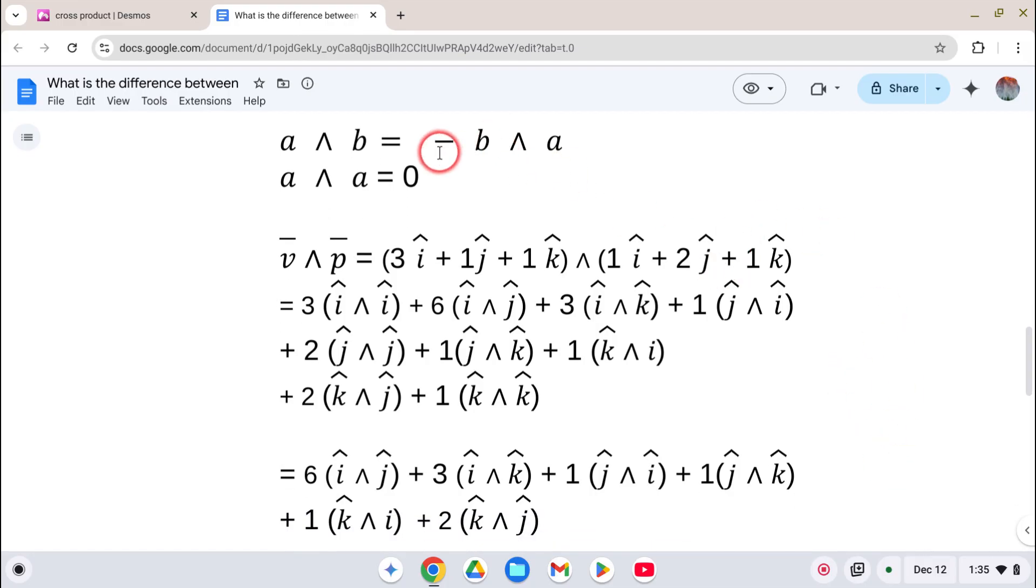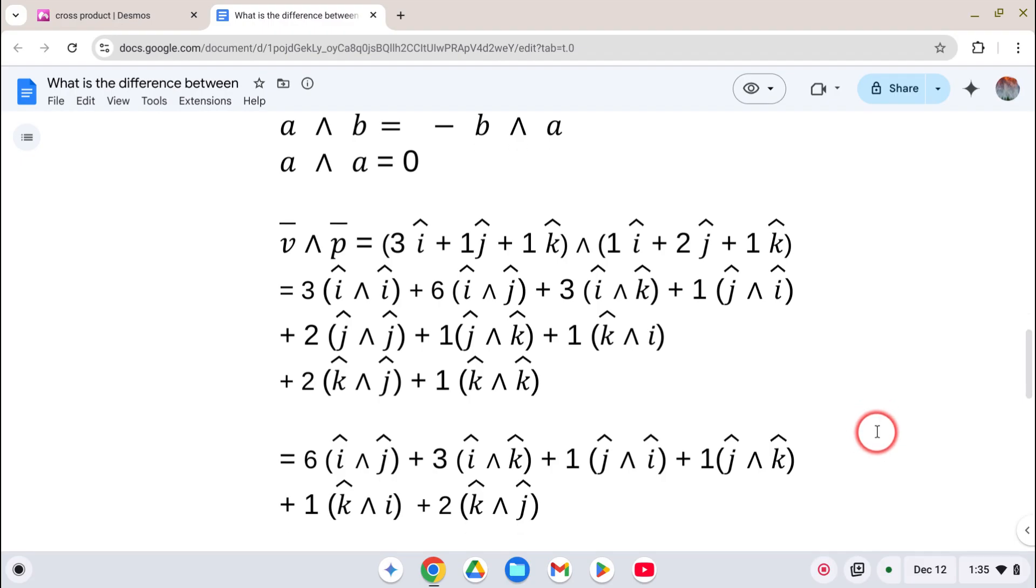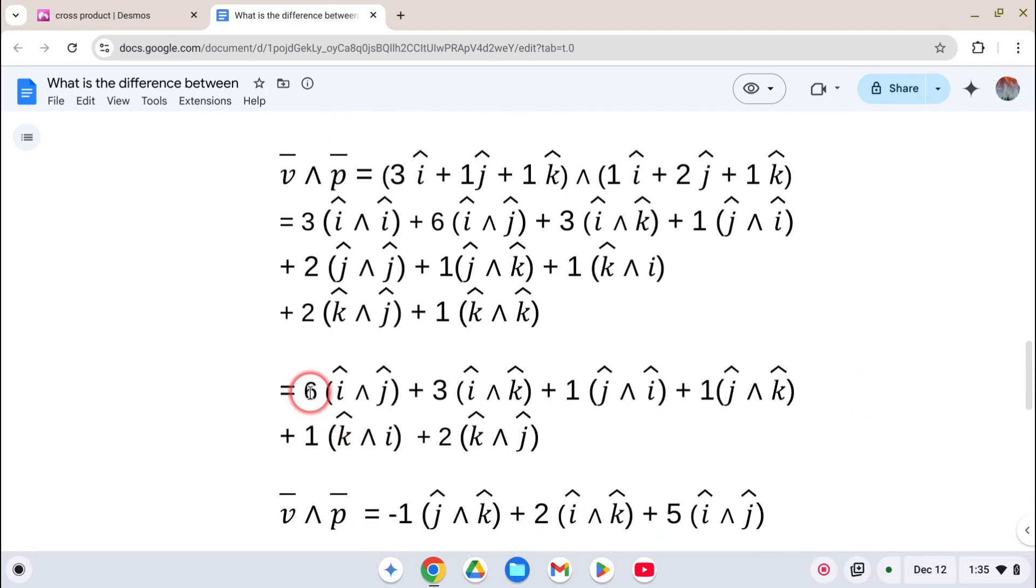Now the other property is that this is the negative of this. So in other words, i-hat wedge j-hat, this becomes the negative of that. So I can combine these two things. So I can say 6 minus 1 is 5, i-hat wedge j-hat. And here's the i-hat, k-hat. So 3 minus 1 is 2, i-hat wedge k-hat. What's the last one left? J-hat and k-hat. So it would be 1 minus 2 is negative 1. So here is our wedge product of those two vectors.